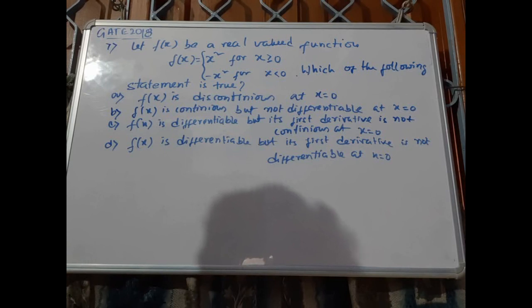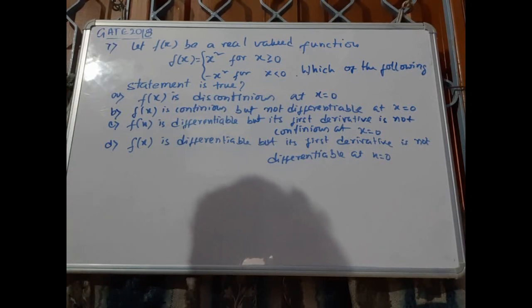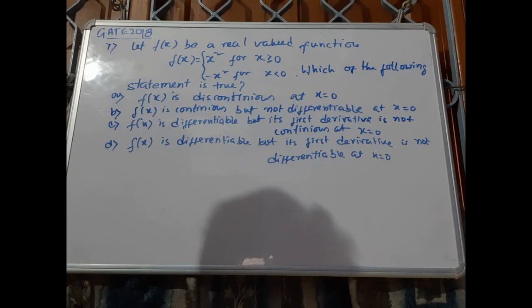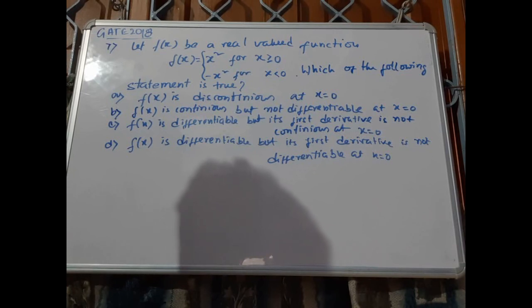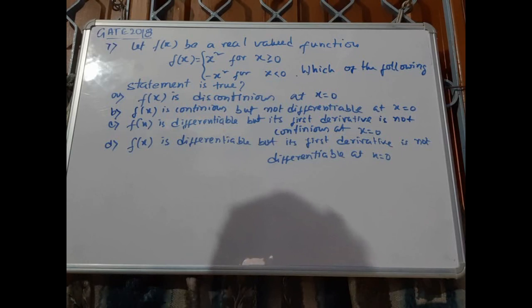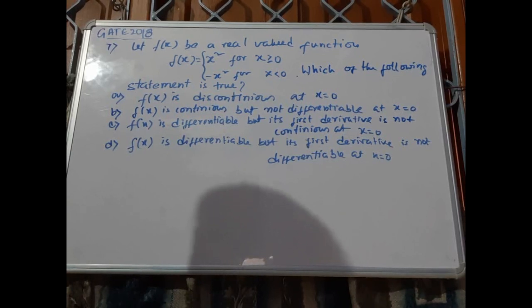Option A: f(x) is discontinuous at x equals 0. Option B: f(x) is continuous but not differentiable at x equals 0. Option C: f(x) is differentiable but its first derivative is not continuous at x equals 0. Option D: f(x) is differentiable but its first derivative is not differentiable at x equals 0.